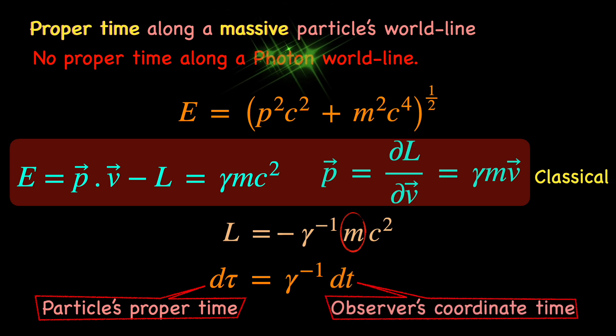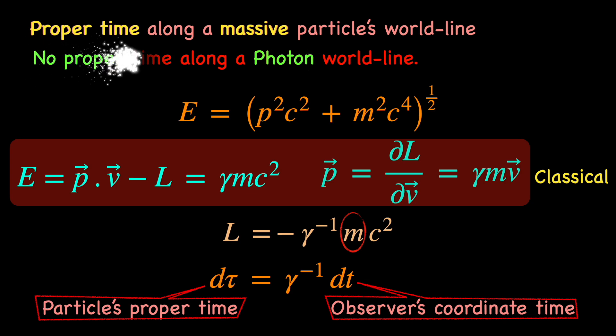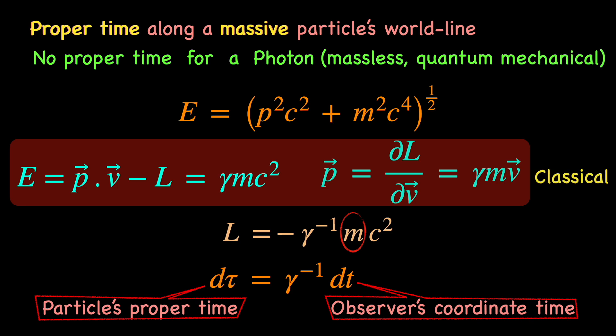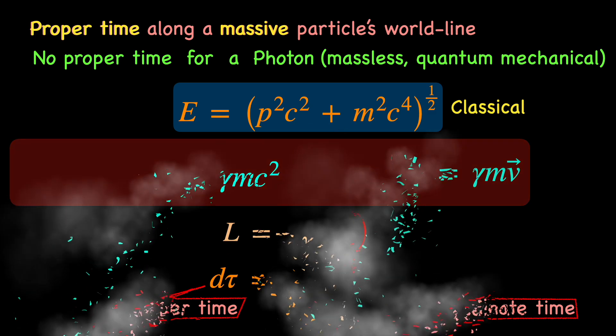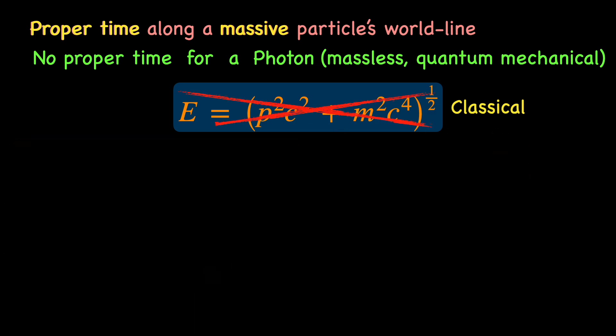Naturally, the photon, an inherently quantum mechanical particle with neither proper time nor rest mass, does not really come under the purview of the classical relativistic massive dispersion relation. So, we should not expect to get the photon's energy-momentum relation from this.